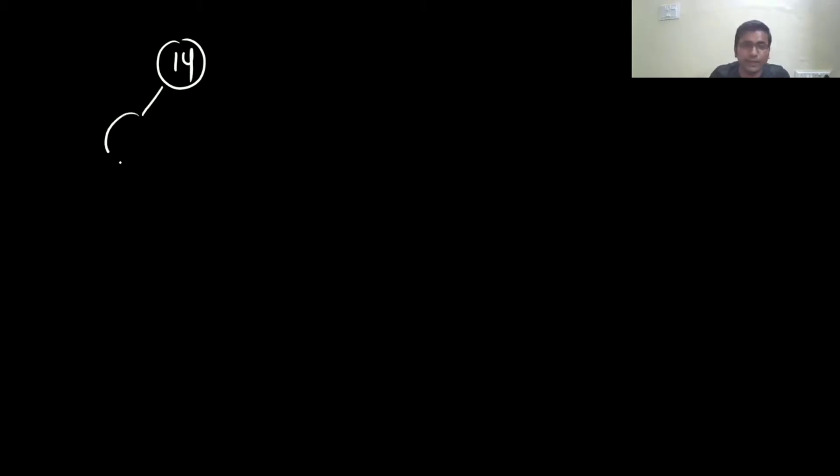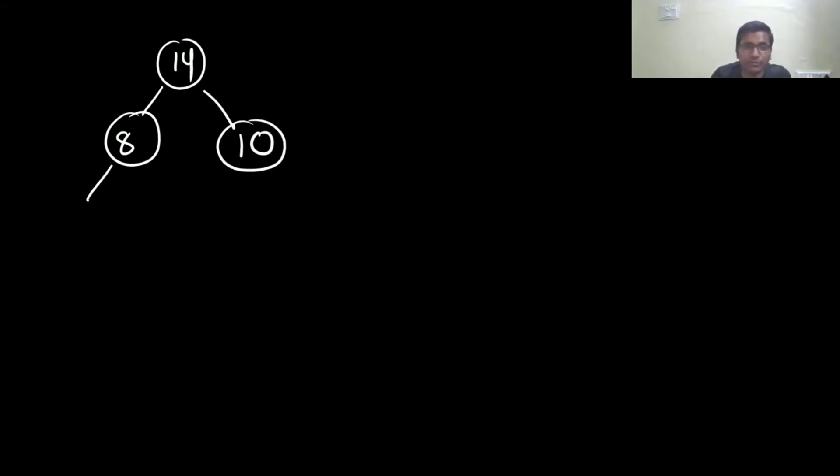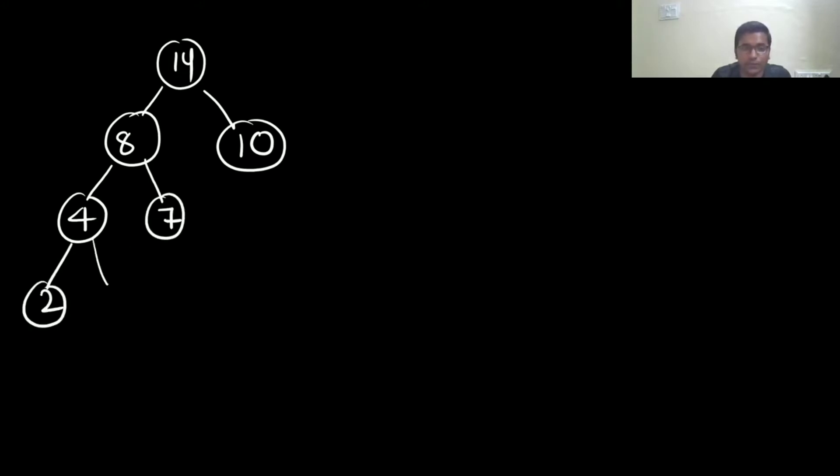Now we will see the increase-key operation. We have already seen deletion. I will take the same complete binary heap example so you can see the differences when I call different functions. The heap has values: 14 at the root, then 8, and here 6, 9, and 3.